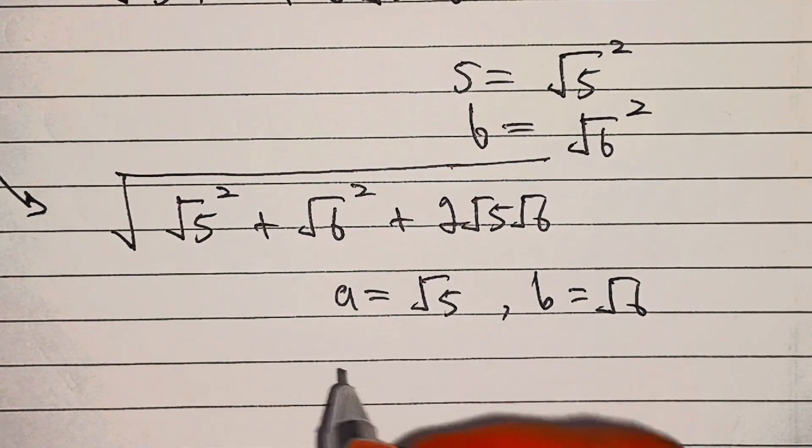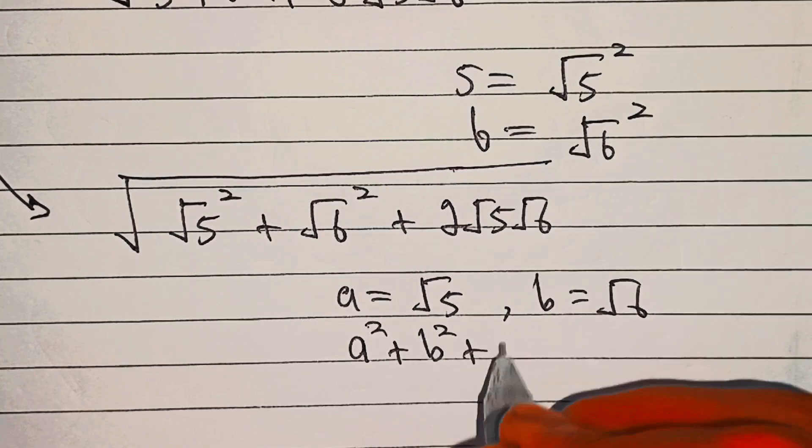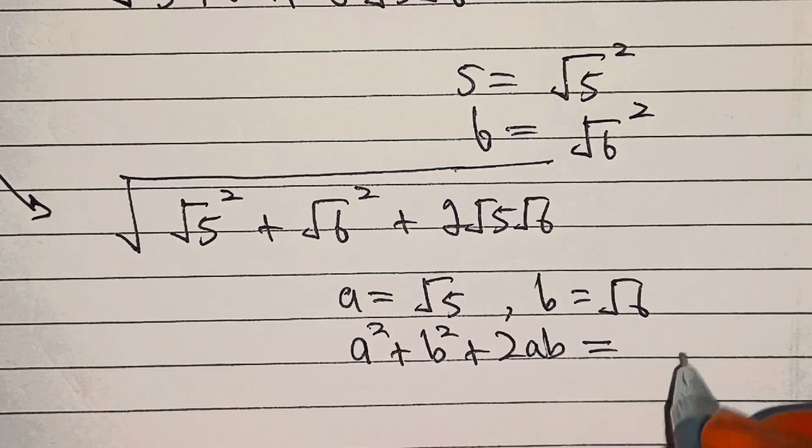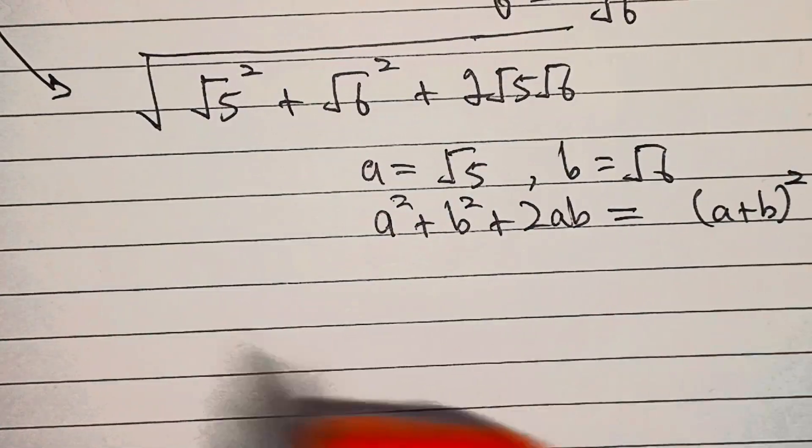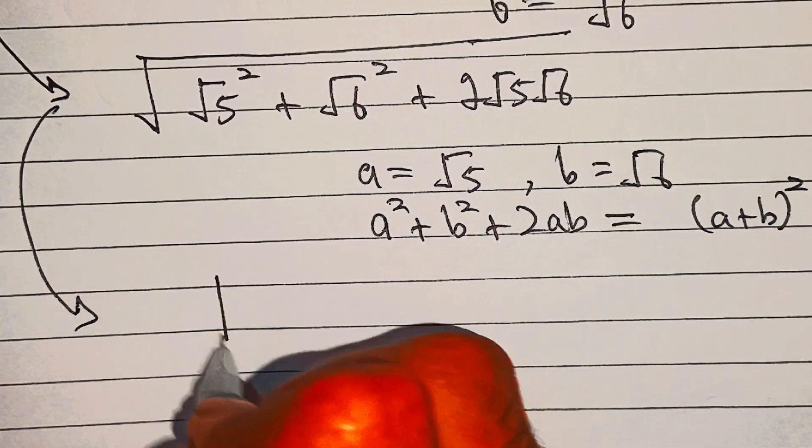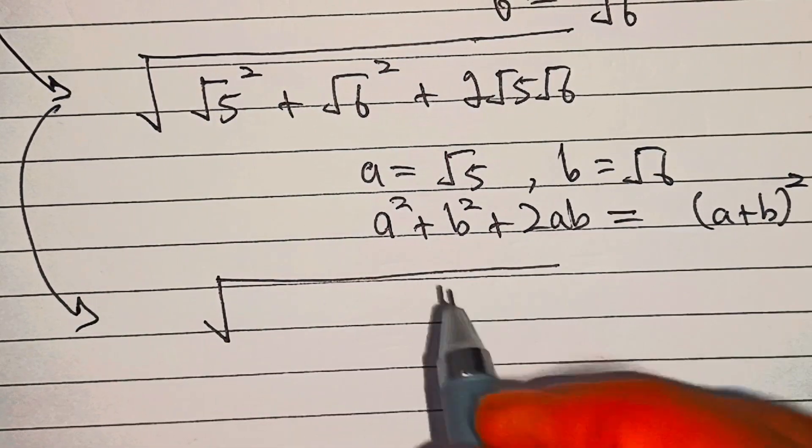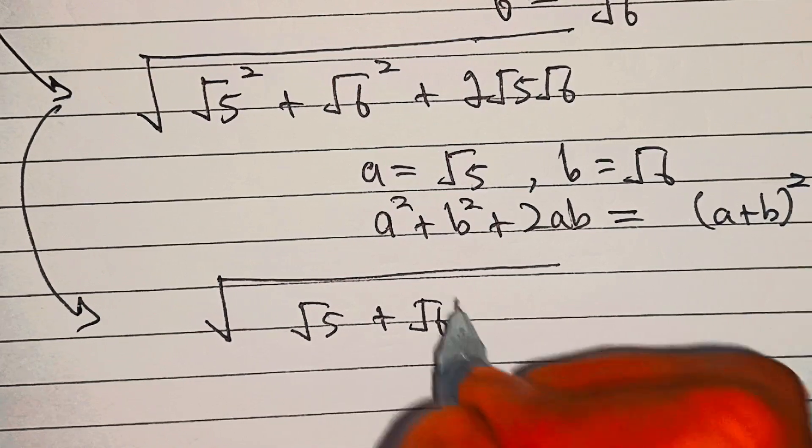This is A squared plus B squared plus 2AB, which equals A plus B whole squared. So we can write this as whole under root 5 plus under root 6 whole squared.